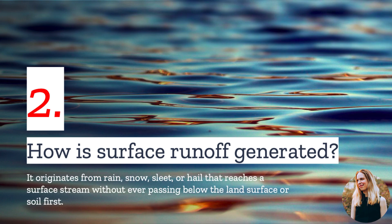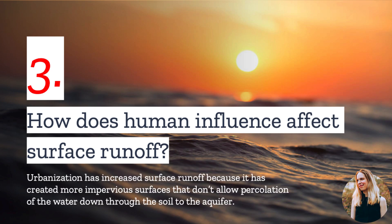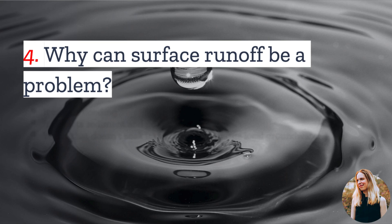Number three: how does human influence affect surface runoff? Urbanization has increased surface runoff because it has created more impervious surfaces like pavement and buildings that don't allow the water to infiltrate down through the soil to the aquifer.